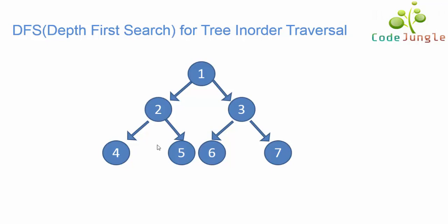To understand in-order traversal, we will consider this tree as an example. In in-order traversal, for any combination of a root node, its left child, and its right child — whether this combination or that combination — the pattern to display nodes is: first the left-hand child, then the root node, and then the right-hand child.